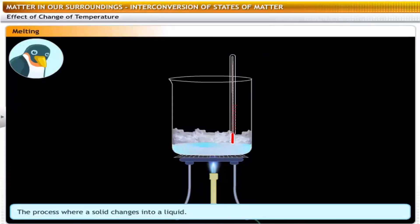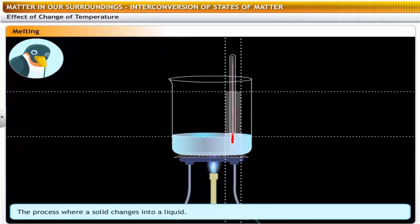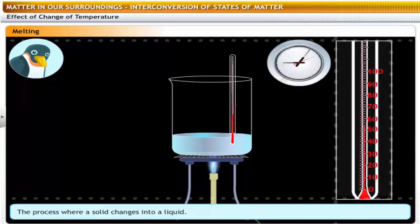Observe that the temperature shown by the thermometer remains at 0 degrees centigrade till all the ice melts. After that, the thermometer shows a rise in temperature. Why is that?